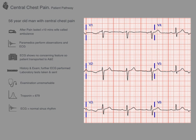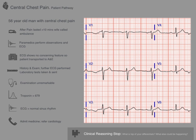Repeat ECG shows no dynamic change — still a normal sinus rhythm. The ED staff are going to want to get the patient out for bed space, so they'll admit to medicine and the patient will likely be referred on to the cardiology team. We have a clear history, a normal ECG, but an unequivocally positive troponin — stop and think about how these new bits of information change what you think is going on.